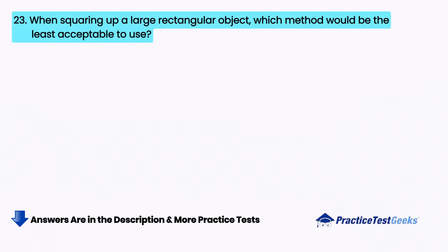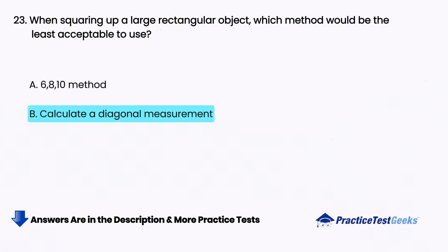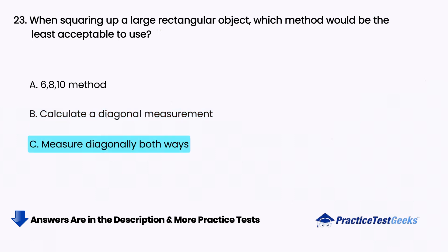When squaring up a large rectangular object, which method would be the least acceptable to use? A. 6-8-10 method, B. Calculate a diagonal measurement, C. Measure diagonally both ways, D. Framing square.